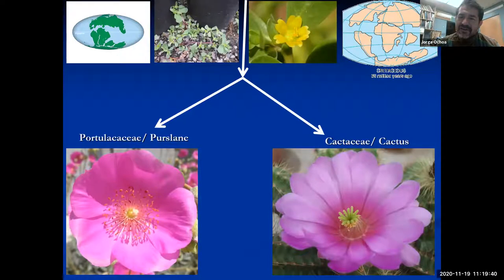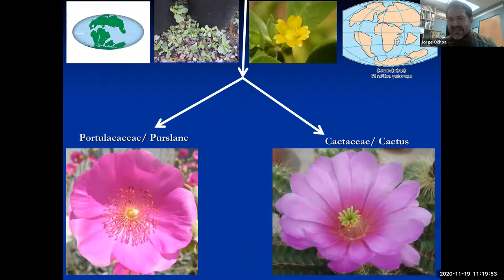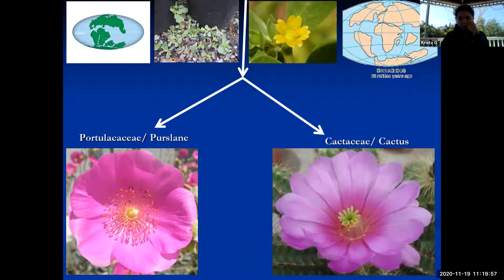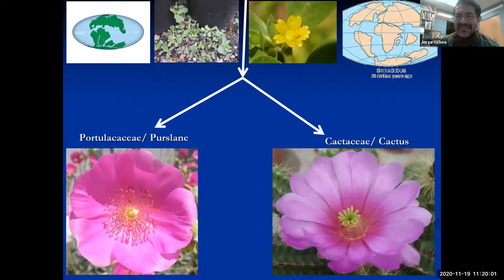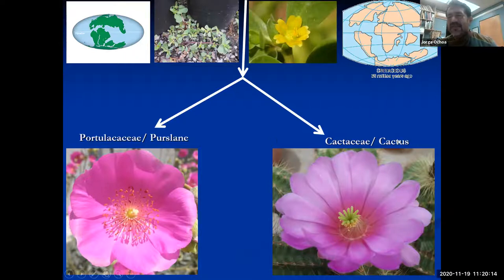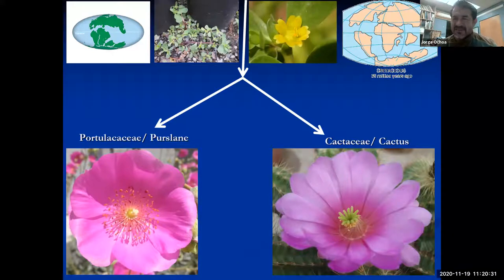The origin of the cactus was probably a common ancestor that gave rise to the weedy plant we know as purslane. A purslane-like ancestor — probably a succulent, just like purslane, from South America — gave rise to the Portulacaceae, which is the purslane family, and the Cactaceae, the cactus family. Both families share very similar flowers: both are succulent, both have very showy flowers with lots of stamens and many of the same features, because they share a very close common ancestor.